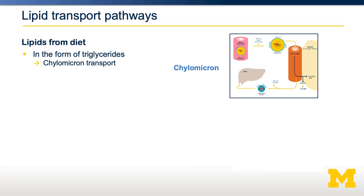Lipids can be obtained in multiple ways. They can be generated from our diet. In this case, they're packaged into triglycerides within the enterocyte and use chylomicrons for transport. These are generated in the small intestine and deliver lipids to the muscle and adipose.